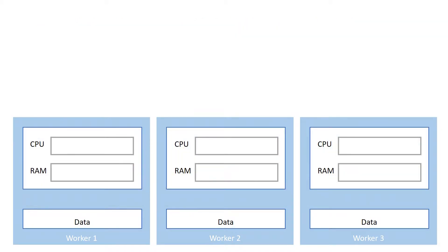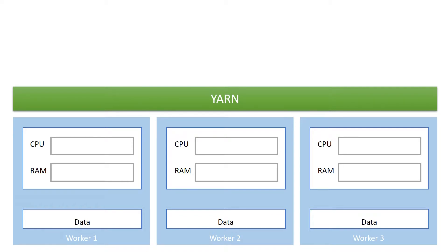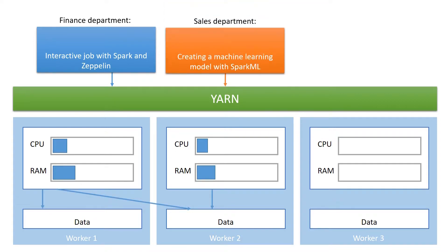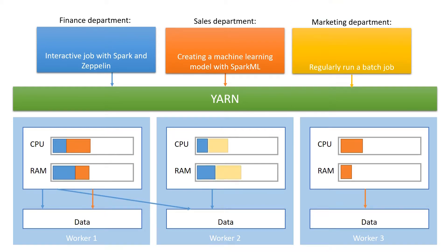So how does YARN do that? Well, let's have the same cluster but now with YARN. The first department runs a job and it talks to YARN first: 'Hey, I want to run this job.' And YARN can, for example, split that workload to multiple workers — because after all, we're running a distributed system here. Why would you run everything on one node? And here's the second department running their stuff, also spread across multiple nodes. And now we have all the space in the world for that important third job from the marketing department, and it can just run without any problem.